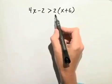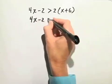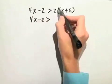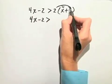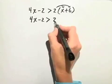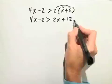First, we need to distribute on the right-hand side. 4x minus 2 is greater than, remember, distribute that 2 all the way through, and we'll have 2x plus 2 times 6 gives us 12.